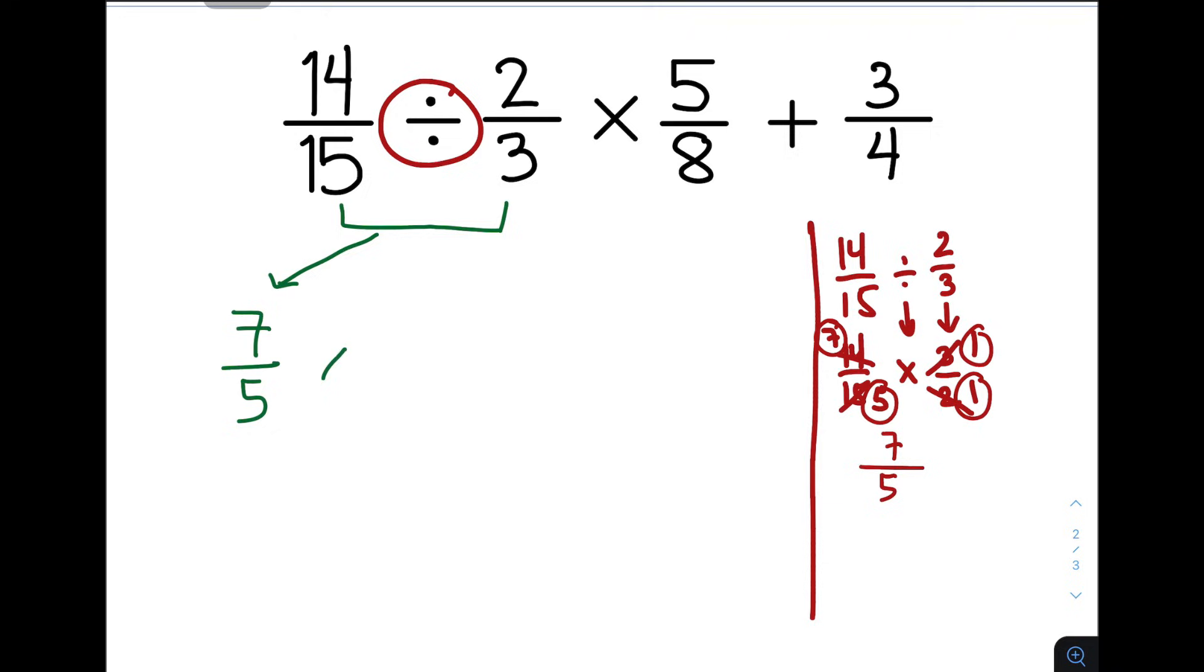So we have the 7 over 5 times 5 over 8 plus 3 over 4. So as you can see, from 4 fractions, after doing division, tatlo na lang. And obviously, ito na next natin.